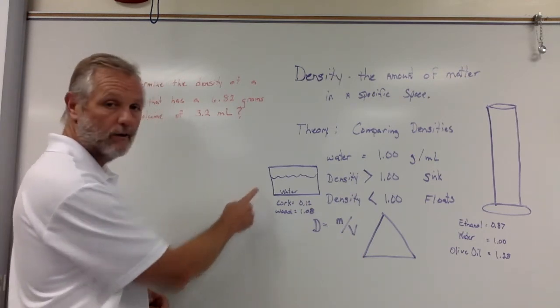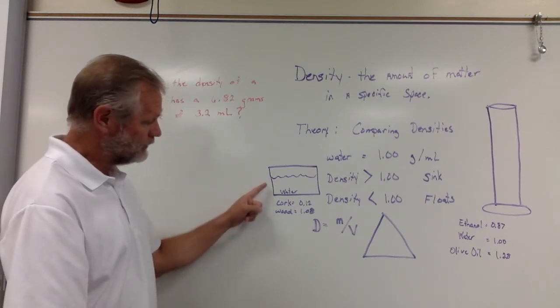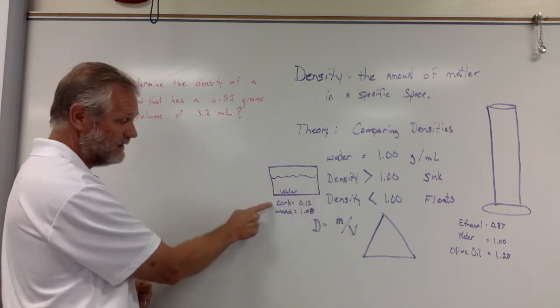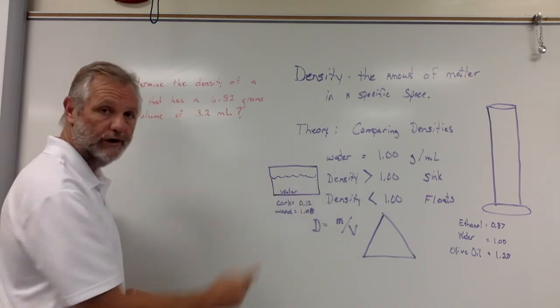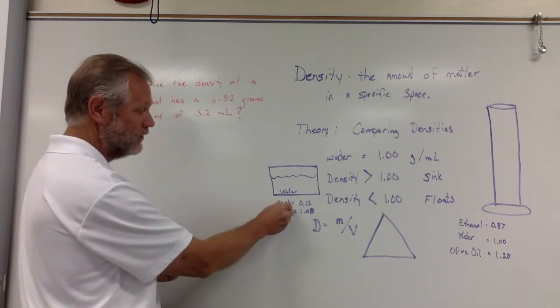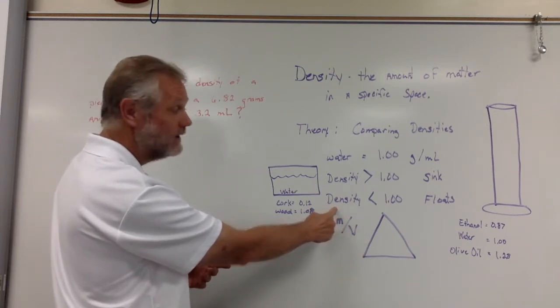Good example is right here. We look at two objects. I first have a trough of water, and then I have cork and I have wood. The cork has a density of 0.12. I take the cork, I place it in the water. Since it is less than one, it will float.